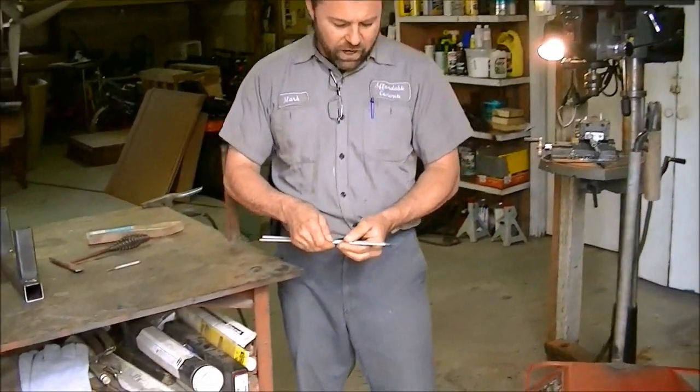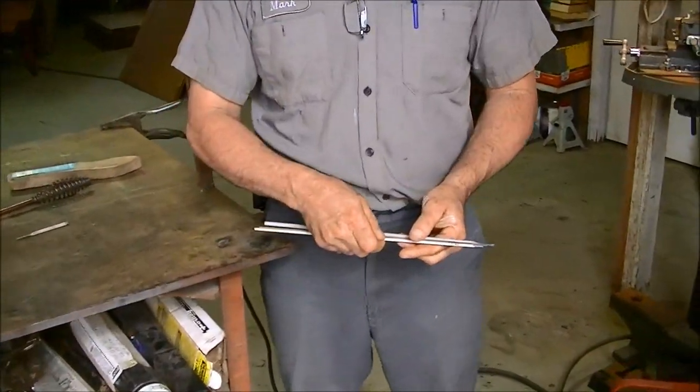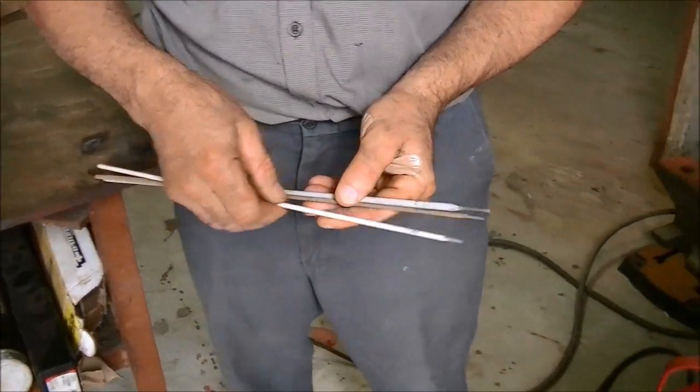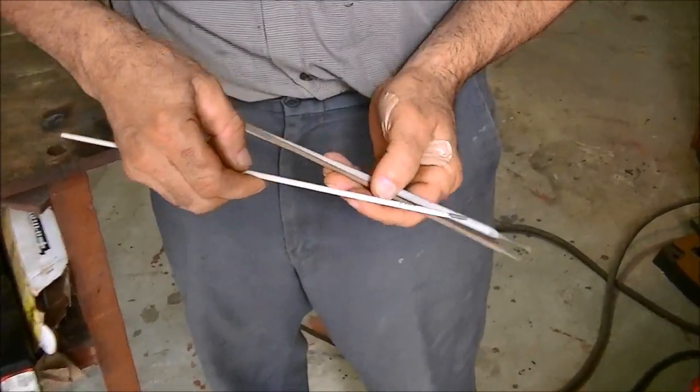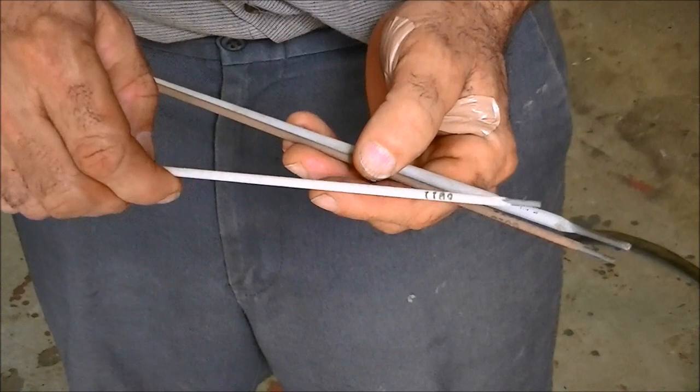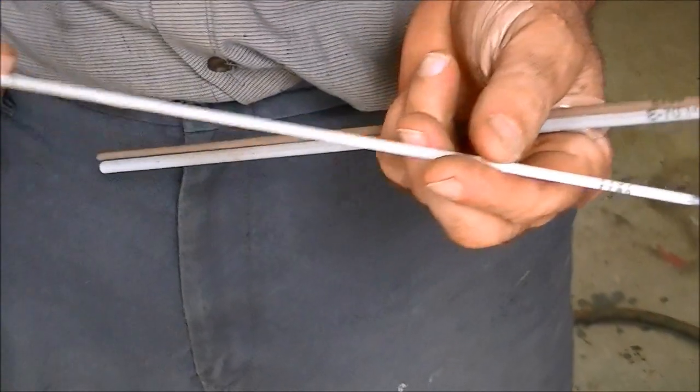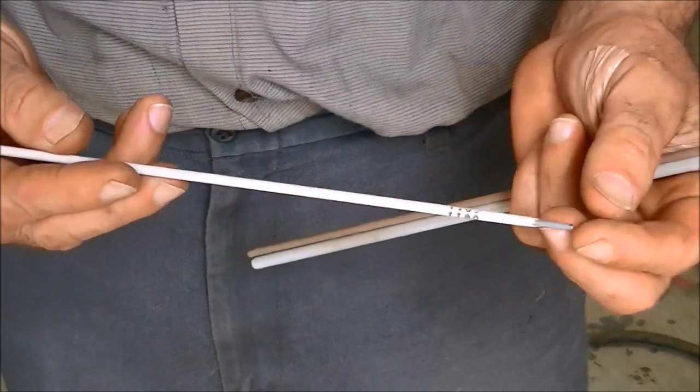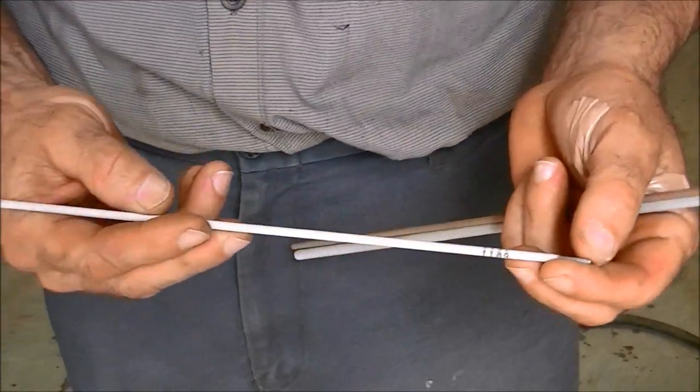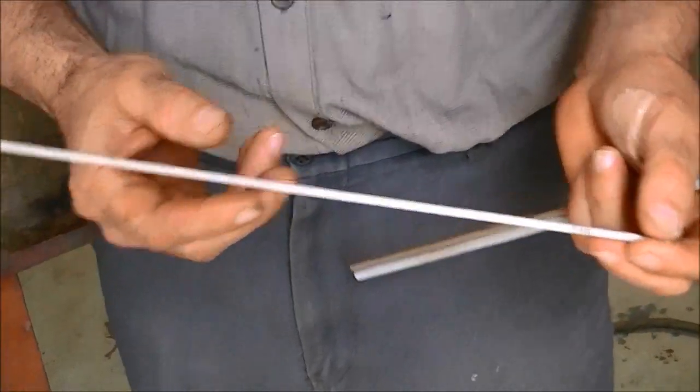The three basic rods we're going to be talking about today are the 6011. It's a good rod, 3/32". It's a good rod for just your basic. What you see is what you get when you're welding with this rod. It produces a lot of splatter as its downfall, but it's real easy to weld with.